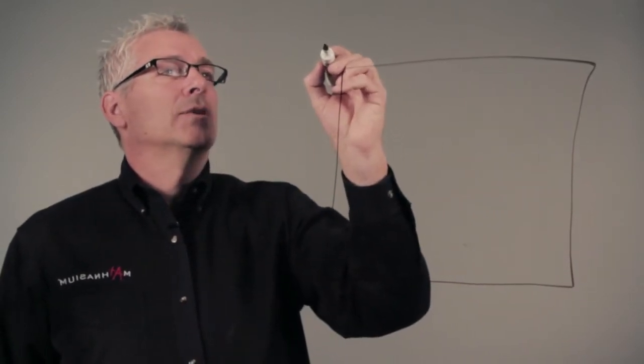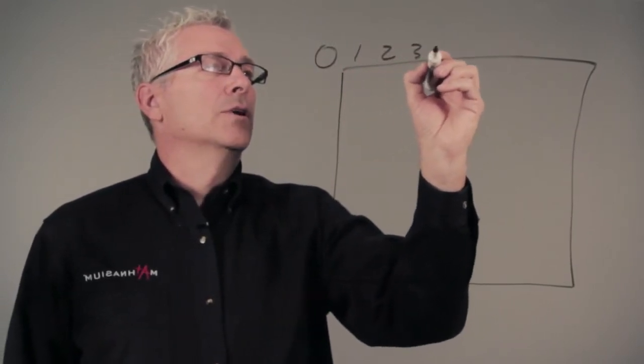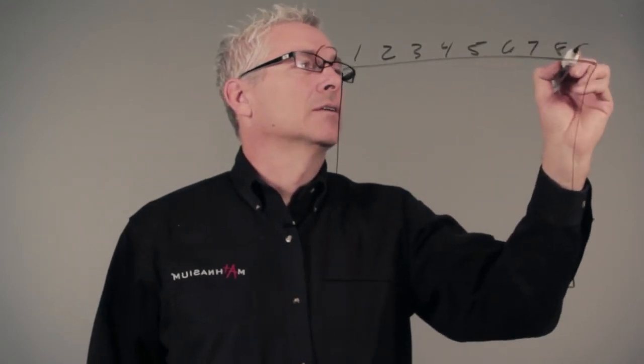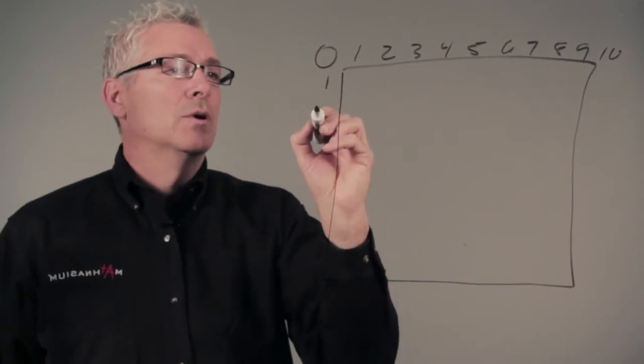It's basically a 10 by 10 grid, and we have up in the corner here 0 1 2 3 4 5 6 7 8 9 10, and down the same side we have the same thing, 1 through 10.